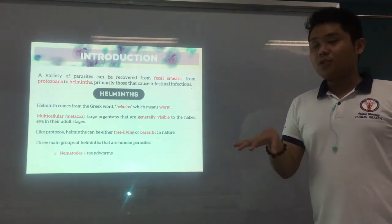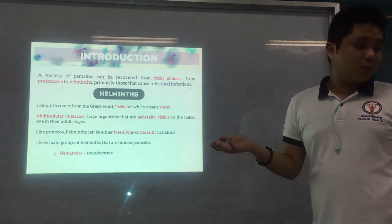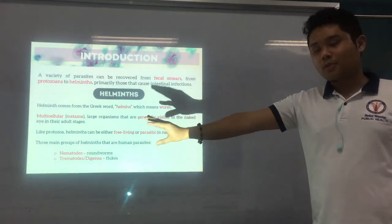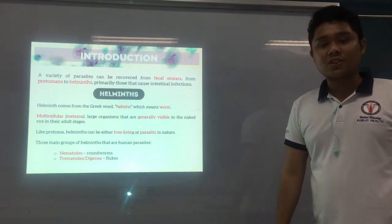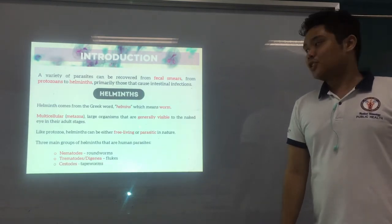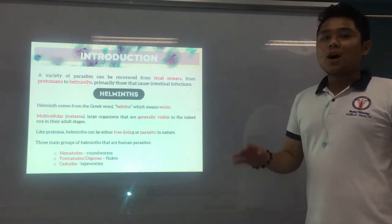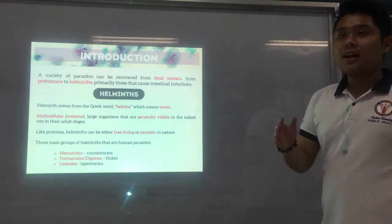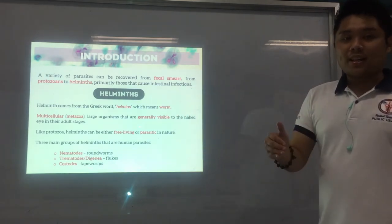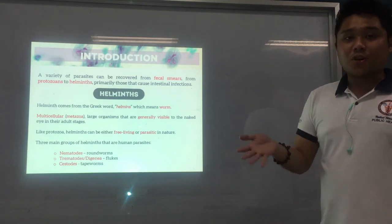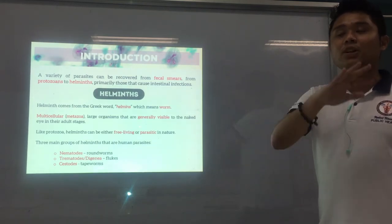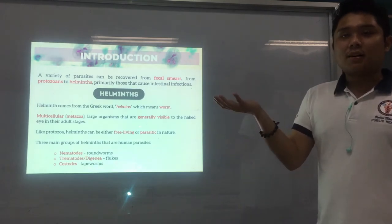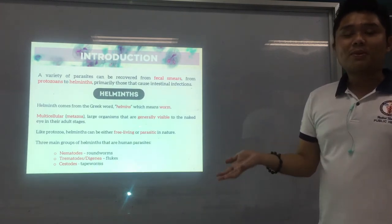Number one is your nematodes, also known as roundworms. Next, you have your trematodes, or digenea — your flukes. And lastly, your cestodes — your tapeworms. We will go individually through the different groups, and I'll share some parasites in each group with their infective stage, life cycle, mode of transmission, and all that.